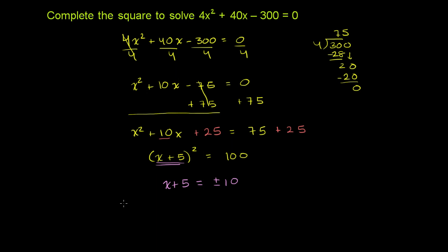Or we could separate it out. We could say that x plus 5 is equal to 10, or x plus 5 is equal to negative 10. On this side right here, I can just subtract 5 from both sides of this equation. Subtracting 5 from both sides, I get x is equal to 5. And over here, I could subtract 5 from both sides again. Subtract 5 again, and I can get x is equal to negative 15. So those are my two solutions.